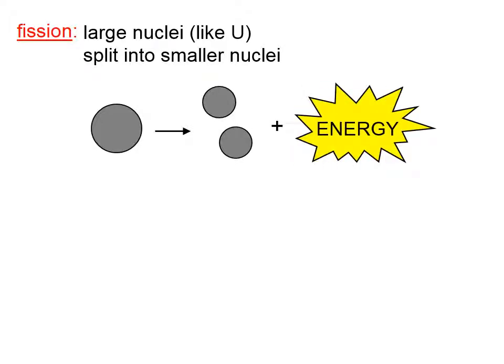In fission, large nuclei like uranium split into smaller nuclei. Here we have a large nucleus, and in fission it will split into two somewhat smaller nuclei, but still nuclei of significant size because uranium is a very massive nucleus. What is released in that process is energy.